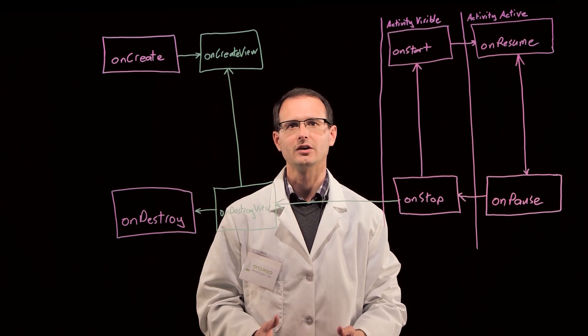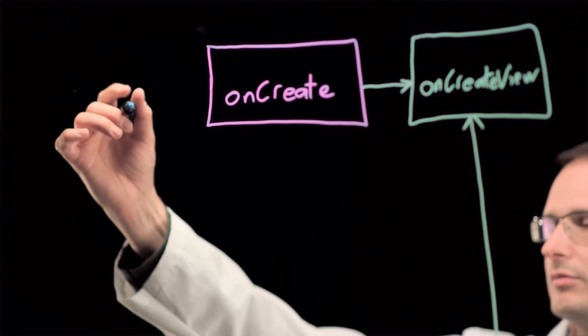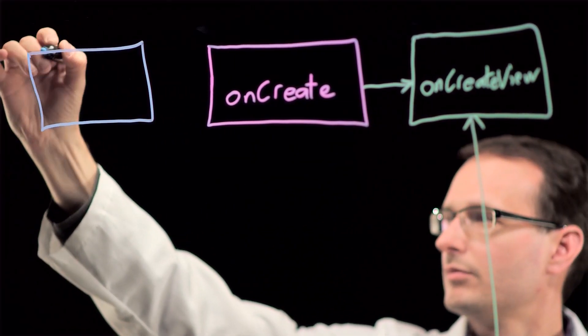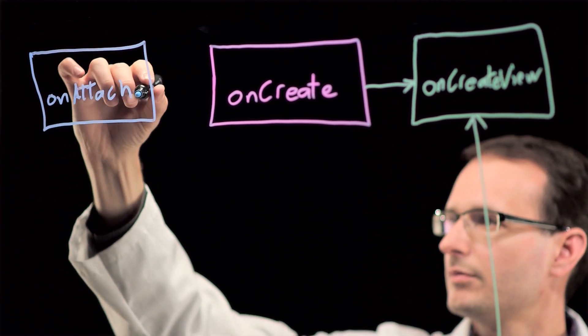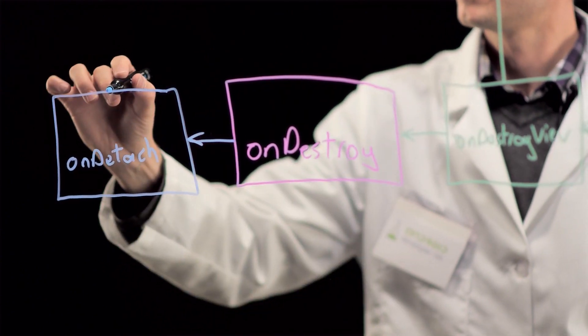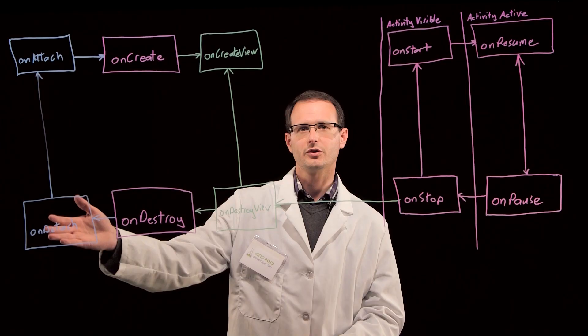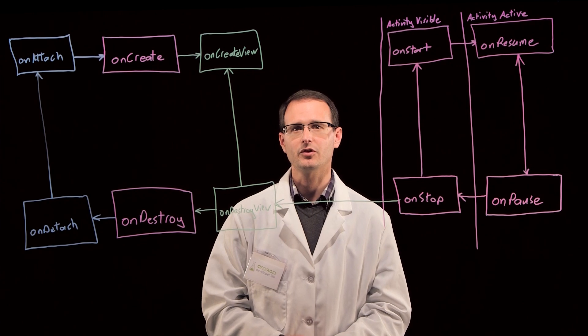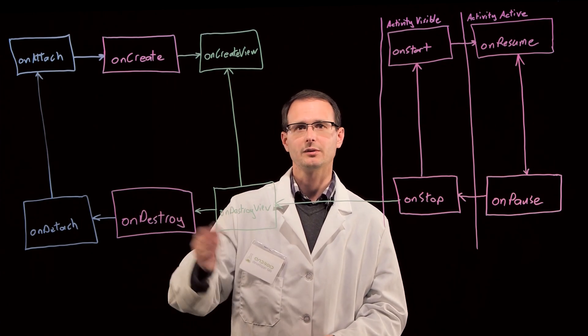And because a fragment can only exist within an activity, we also need callbacks to tell us when a fragment is attached and detached from its parent. OnAttach is your opportunity to get a reference to the parent activity, while onDetach is the last thing that happens, even after your fragment has technically been destroyed.